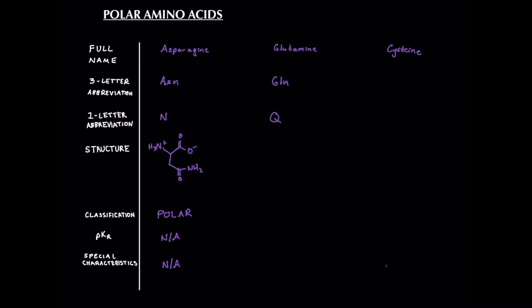So let's get into its structure, which is a bit easier to remember because it is very similar to glutamic acid. So we have one carbon, two-carbon, and another carbon that makes up an amide group. So just like asparagine is the amide form of aspartic acid, glutamine is the amide form of glutamic acid. Now its classification is also going to be polar. It does have a pKa, but we're not going to worry about it for the MCAT. Similarly, with our special characteristics, it does have some, but none that are too applicable to the MCAT.